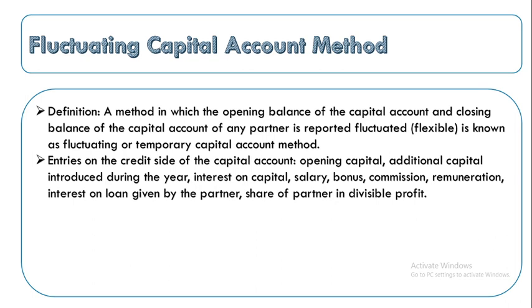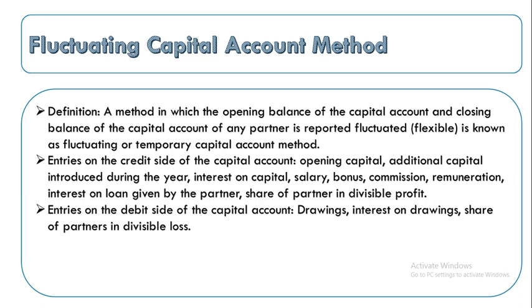The entries on the credit side of the fluctuating capital account include: opening capital, additional capital introduced during the year, interest on capital (if mentioned in the partnership deed), salary, bonus, commission, remuneration, interest on loan given by the partner, and share of partner's divisible profit. On the debit side: drawings, interest on drawings, and share of partner's divisible loss.